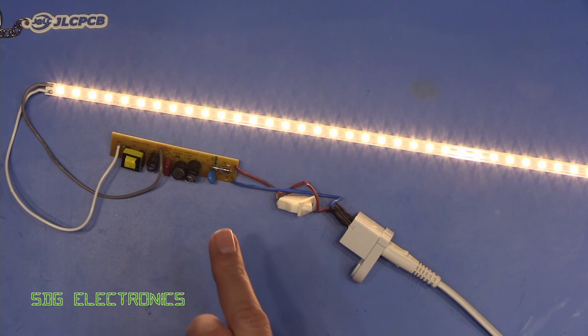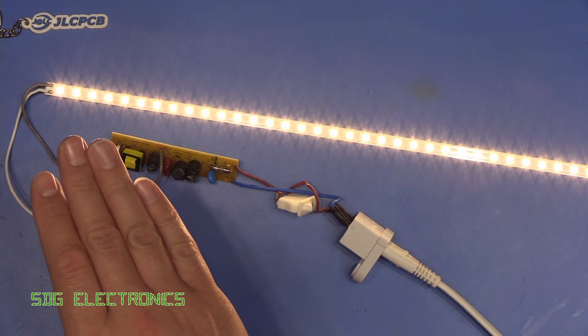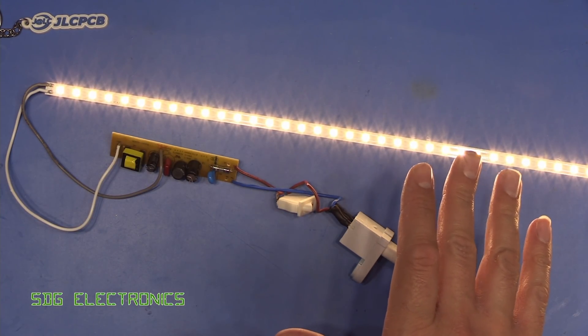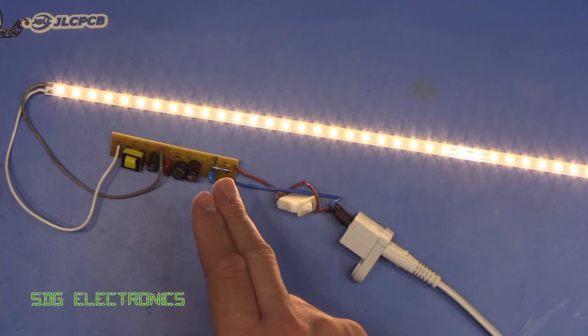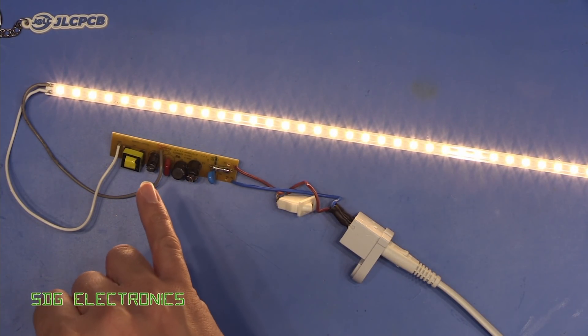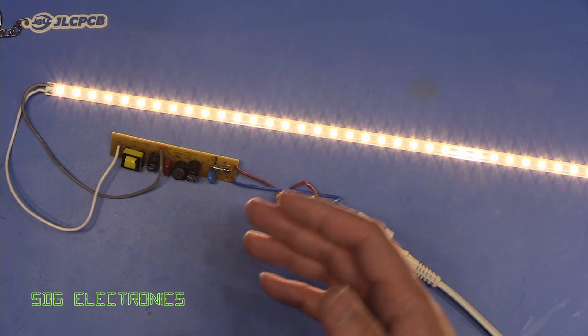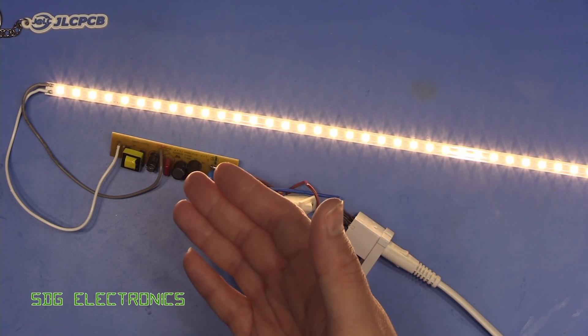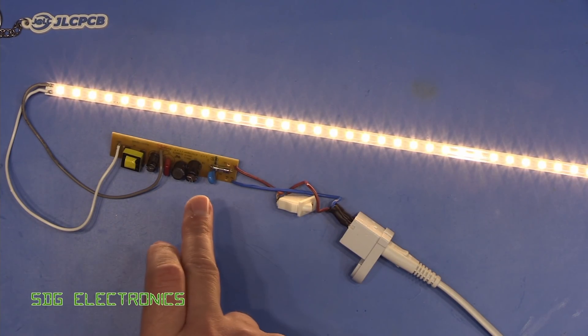But it got me thinking, is there anything on this LED driver board that could actually result in a failure whereby we get no light from the LEDs whatsoever? Now obviously things like the fuse can blow and then it would no longer work. But things like capacitors, which we'd normally associate with going faulty over time in LED drivers and power supplies, may not have that same detrimental effect with this particular design.